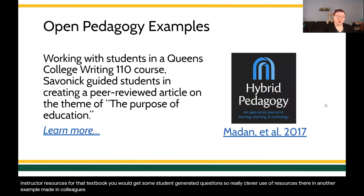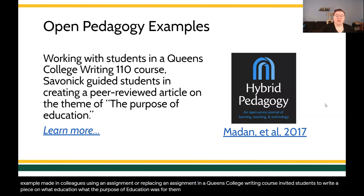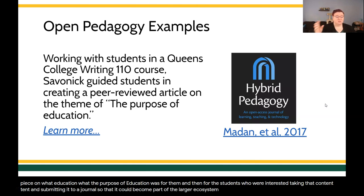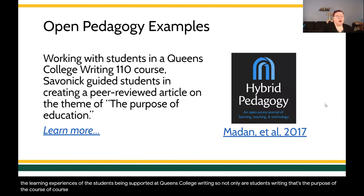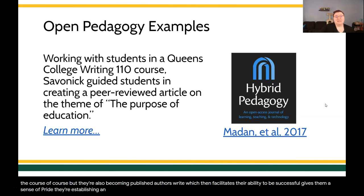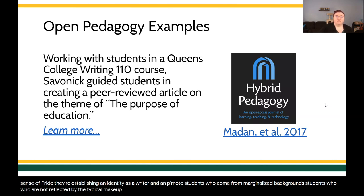In another example, Maiden and colleagues, using an assignment in a Queens College writing course, invited students to write a piece on what the purpose of education was for them. For students who were interested, they took that content and submitted it to a journal so it could become part of the larger ecosystem. It's a beautifully written article that really reflects the learning experiences of students at Queens College. Not only are students writing — which is the purpose of the course — but they're also becoming published authors, which facilitates their ability to be successful, gives them a sense of pride, establishes an identity as a writer, and improves their CV. For students from marginalized backgrounds not typically reflected in higher education, now they've got street cred in higher education.